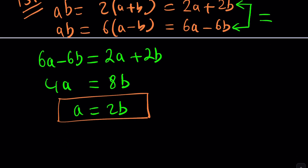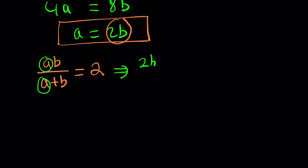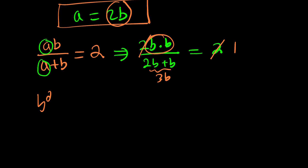So a equals 2b is a good formula that can be used, but that doesn't give us the values of a and b — it just gives us a relationship. So we can go ahead and use this information to solve for a and b by substitution. Let's take the first equation: ab divided by a plus b equals 2. All I have to do is replace a with 2b everywhere. So 2b times b divided by 2b plus b equals 2. That gives us 2b squared over 3b, so b squared equals 3b.